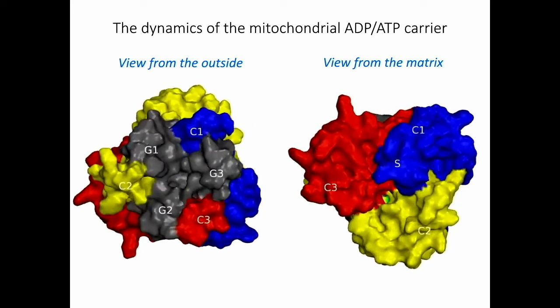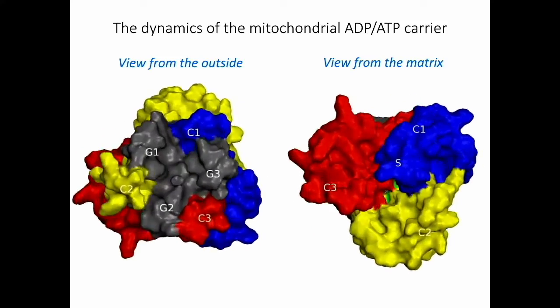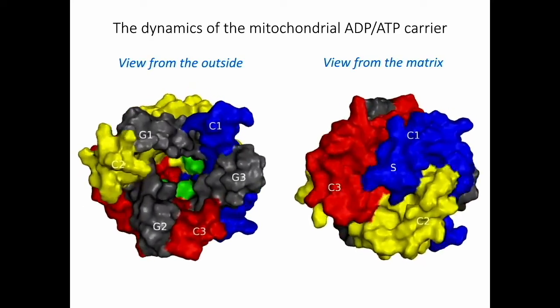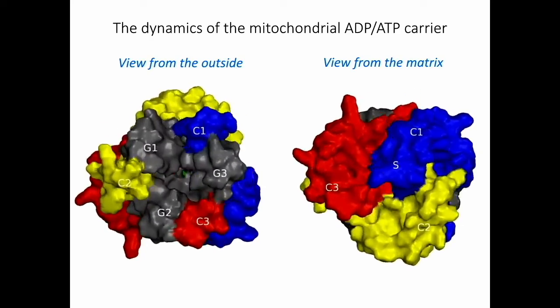It turns out that the mitochondrial ADP-ATP carrier is the most dynamic transporter discovered to date. The conformational changes require six mobile elements, which is a unique feature.